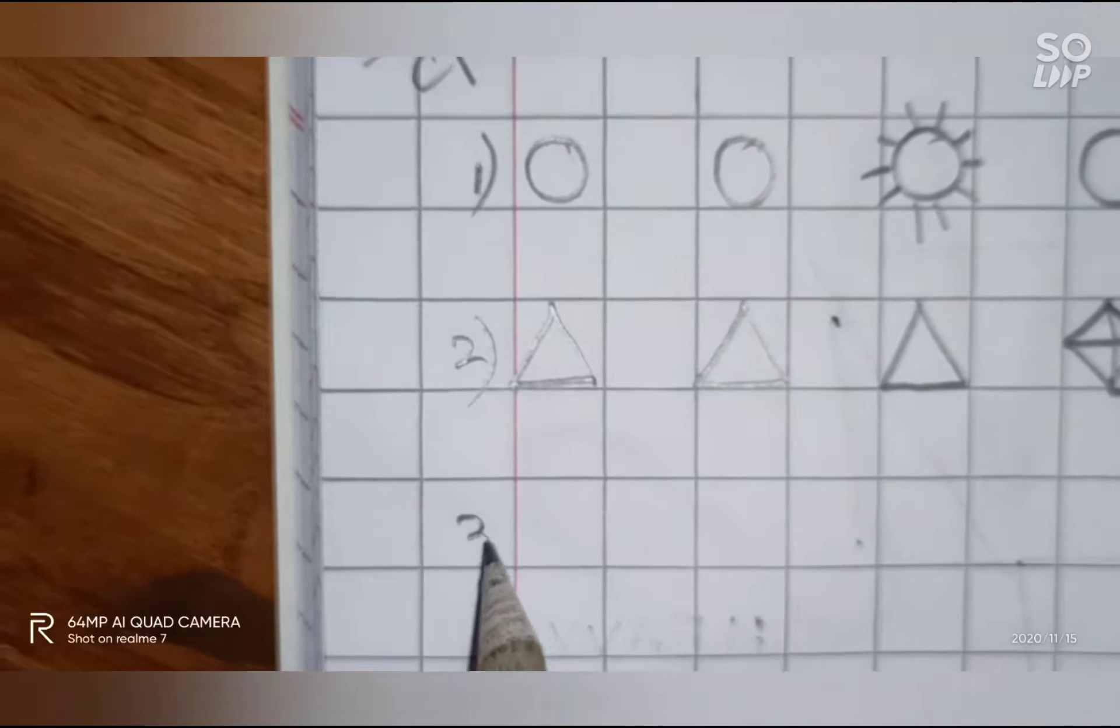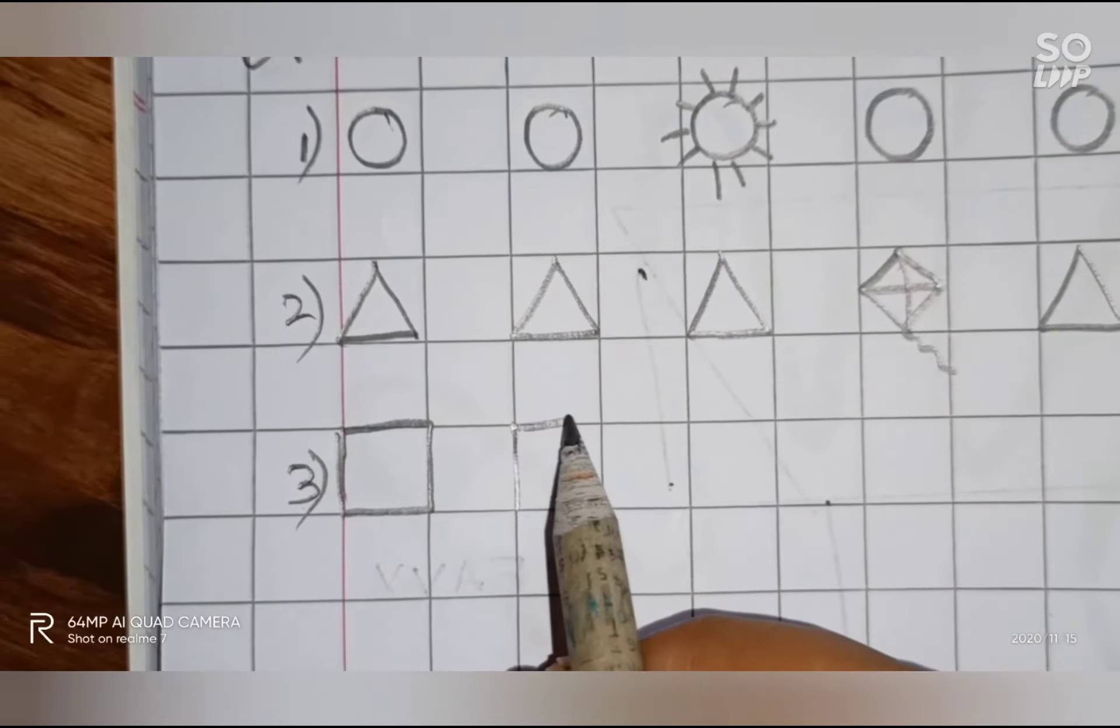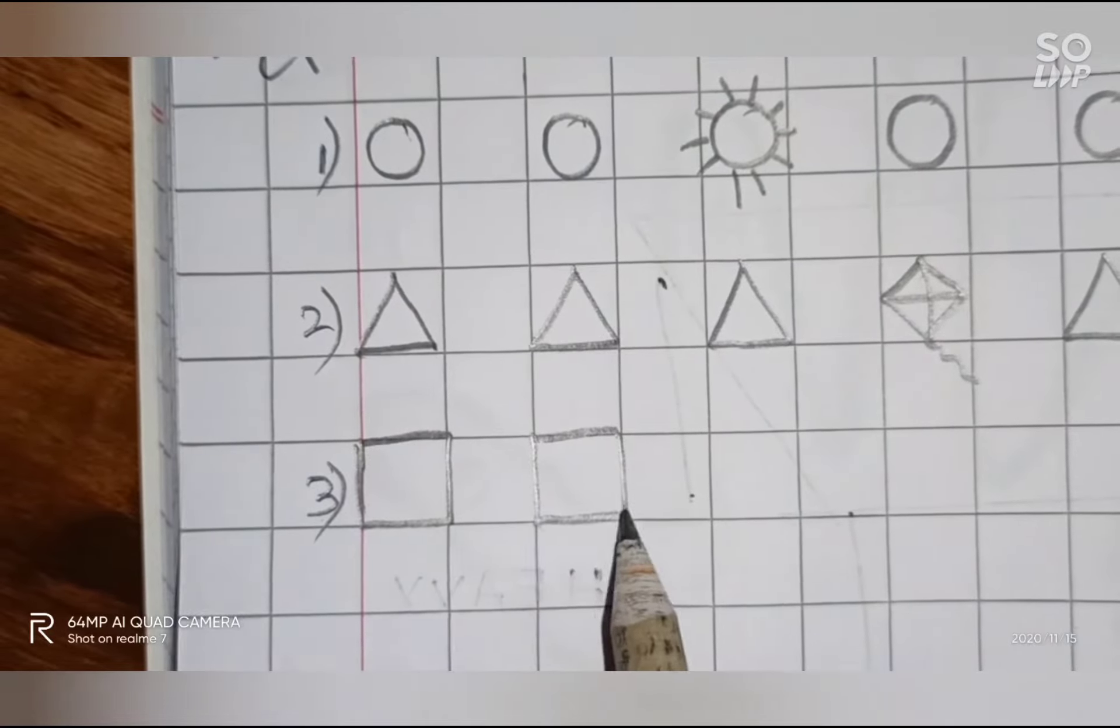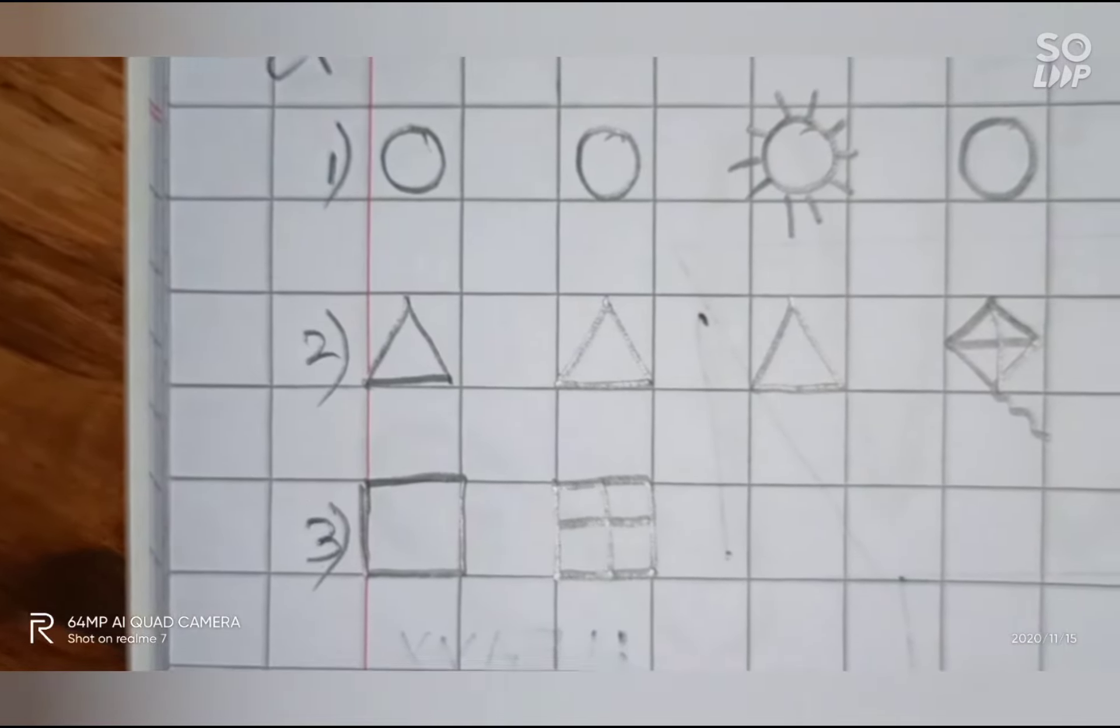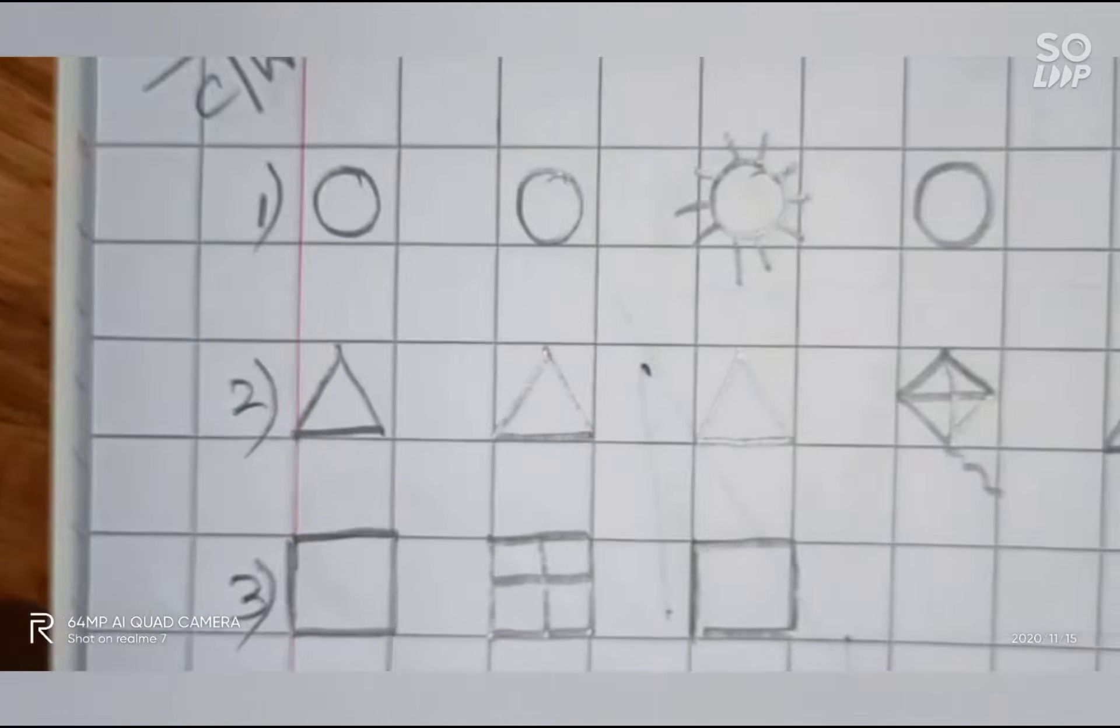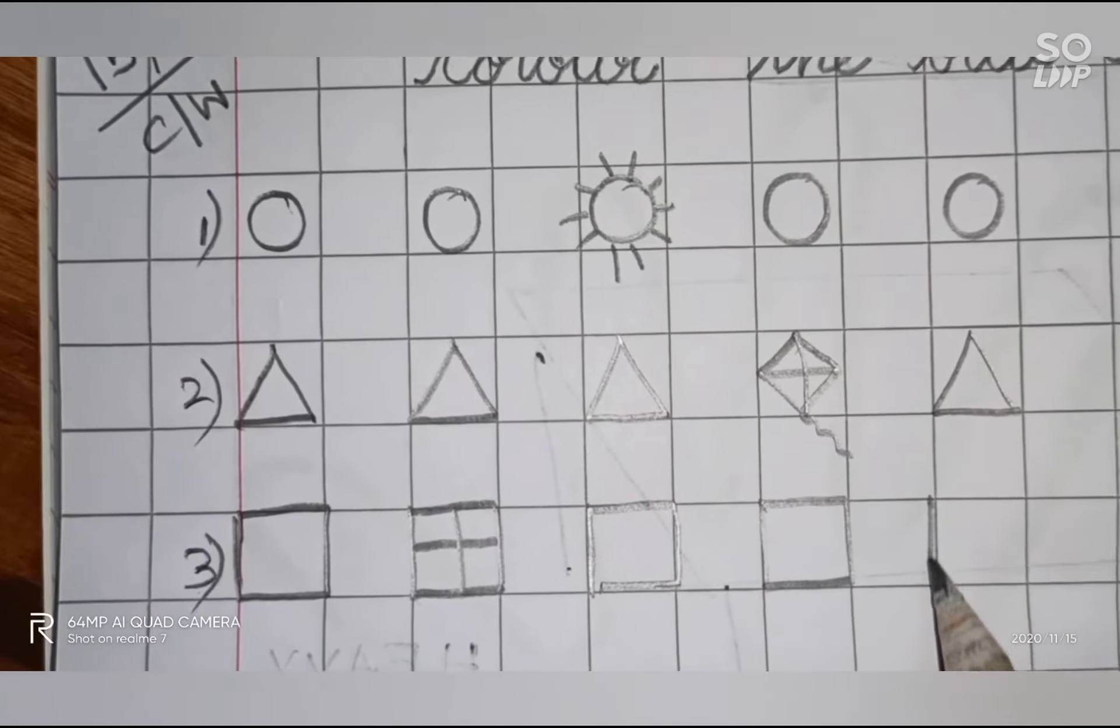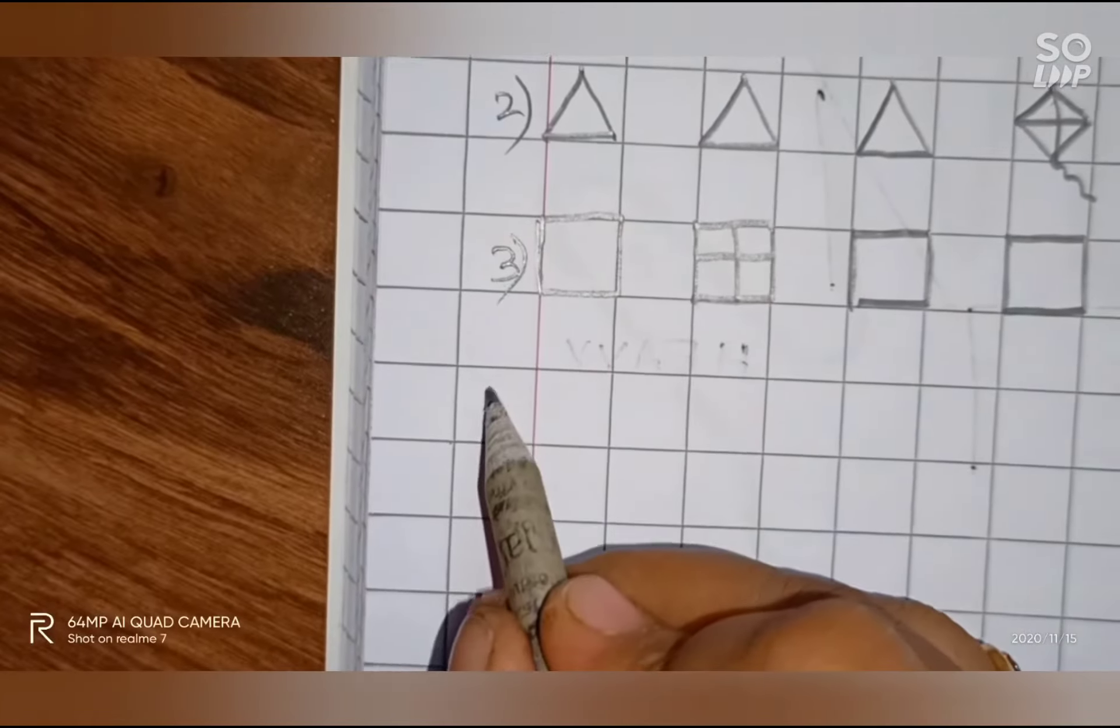Now, we will draw squares like this. We will draw lines and make a squared window. Again, we will repeat the same. Okay, now the next one.